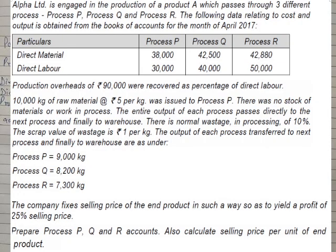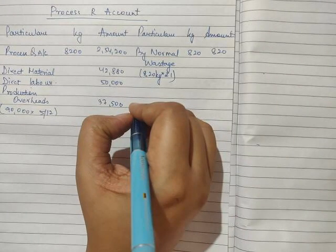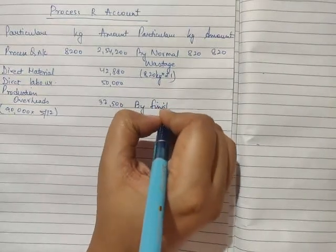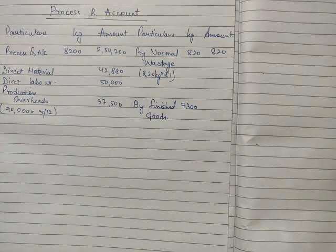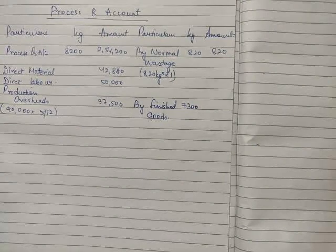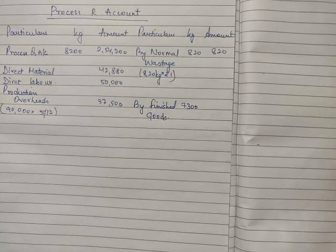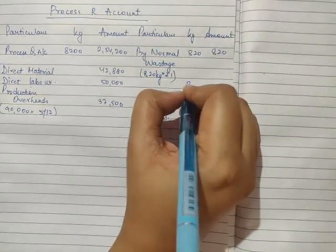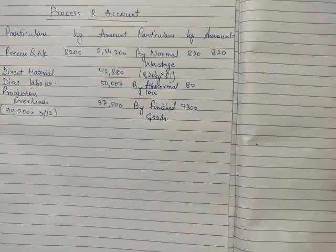The output of process R is 7,300 kgs transferred to finished goods. Out of the total input of 8,200 kgs, we have 820 as normal loss and 7,300 units produced as finished goods. The balance of 80 kgs is your abnormal loss, so by abnormal loss we have 80 kgs. The normal loss is absorbed by the good units — when we calculate the cost per unit we subtract the normal wastage from total input. But the abnormal loss is not absorbed by the good units; it is debited to the costing P&L account.